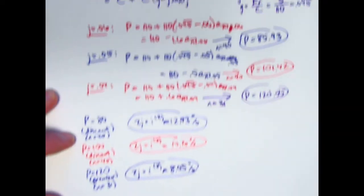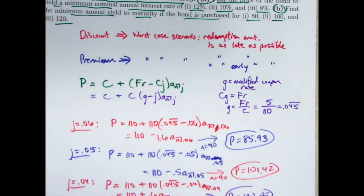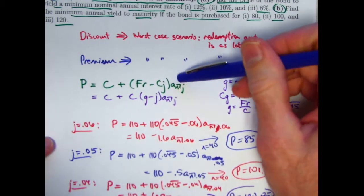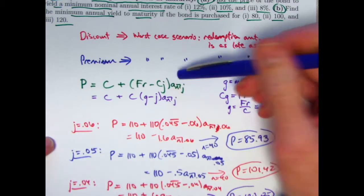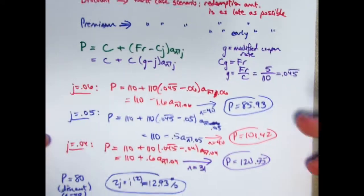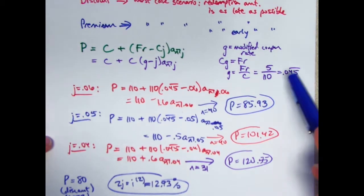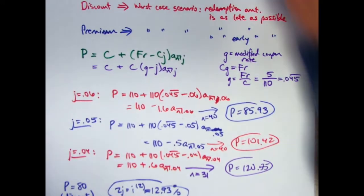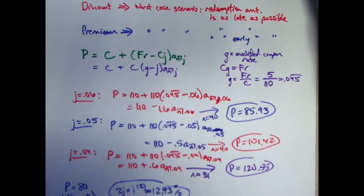Let me remark before I end this video that I didn't have to do this with the modified coupon rate. I could have done it with the original formula here using FNR still. But certainly just to illustrate it, you can use the modified coupon rate. And that does make it clear more quickly whether the bond is going to be bought at a discount or premium. So I think it's worth using.